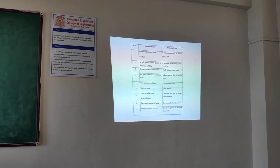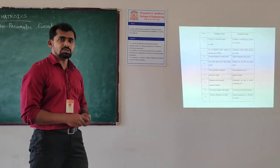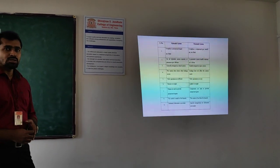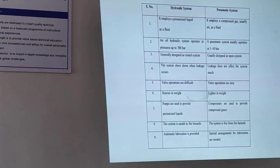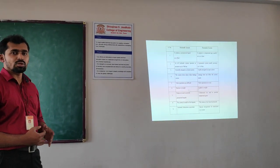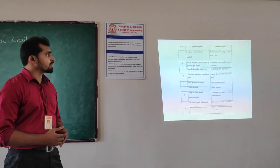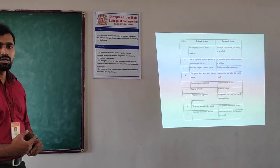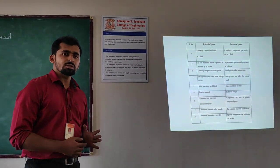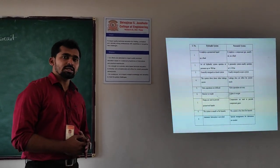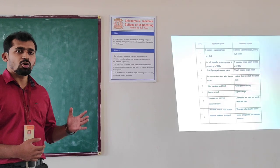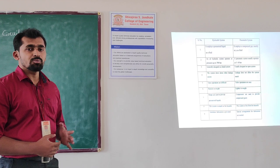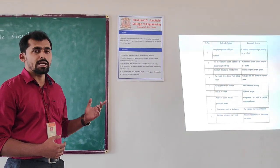In a pneumatic system we use different types of actuators. These actuators may be linear or rotary. In linear there are two actuators: single acting cylinder and double acting cylinder. Whereas in rotary there are DC motor, stepper motor, etc. The first difference between pneumatic and hydraulic is the medium of working. In hydraulic, fluid is used, and in pneumatic we use compressed air. Another difference is that the components used in pneumatic system are lighter than those used in hydraulic system.